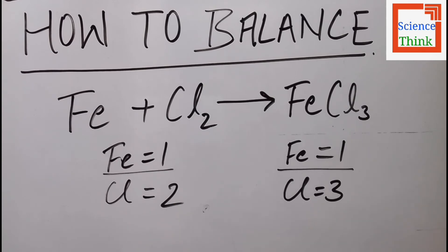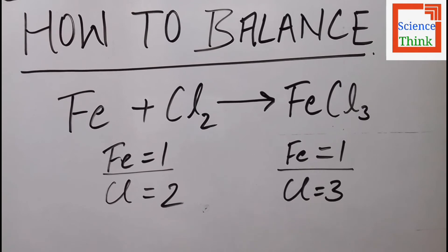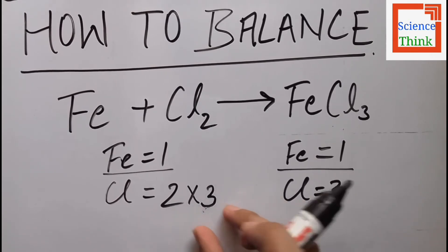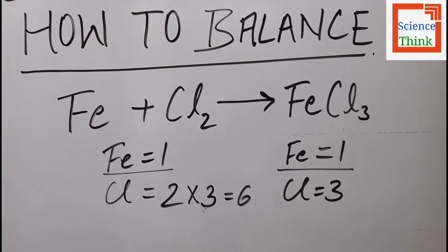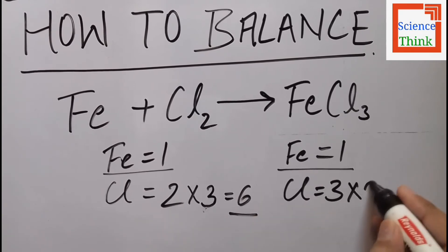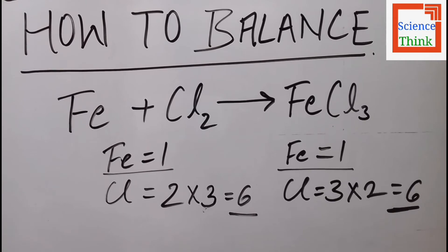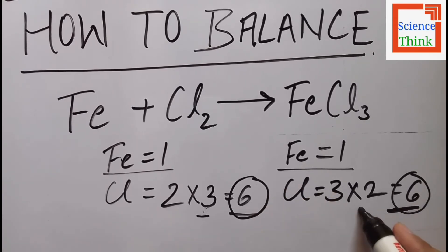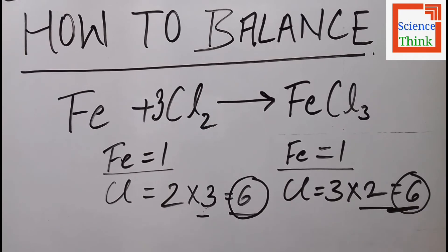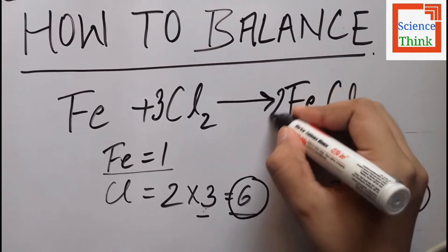If I cross multiply them — multiply three on the reactant side and two on the product side — it becomes six. There are six chlorine atoms on the reactant side, and multiplying two on the product side also gives six, so they both become equal. The chlorine atoms on both sides are now equal.